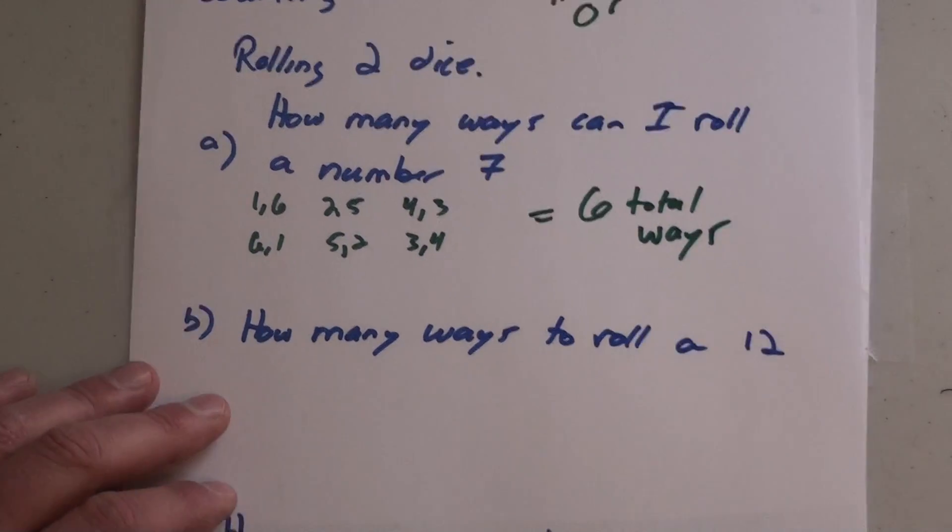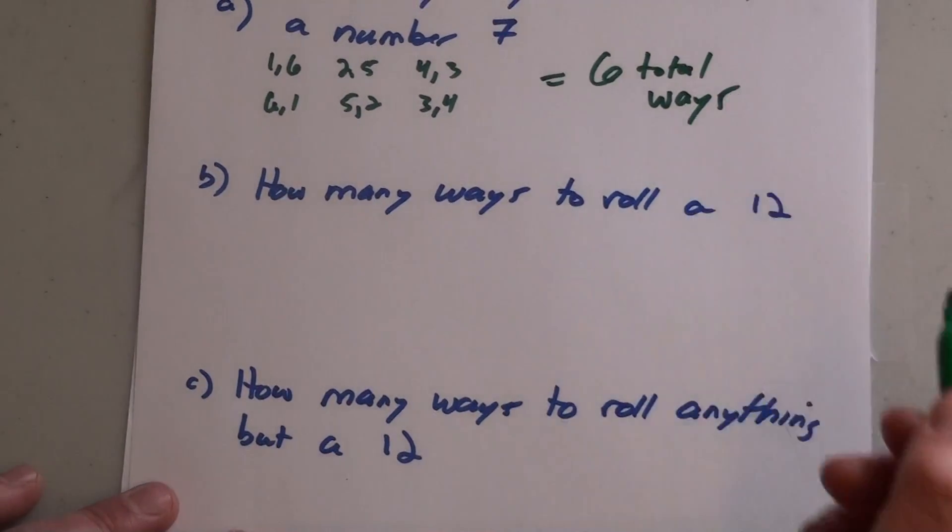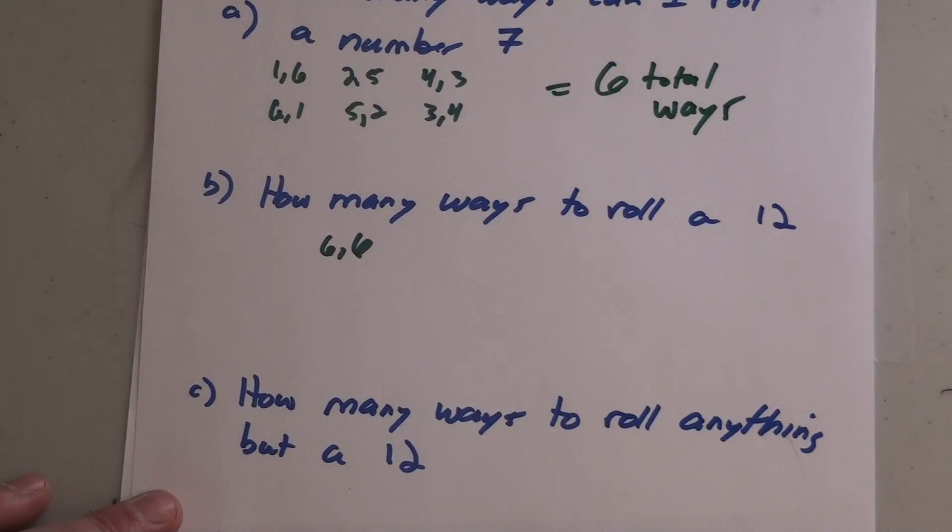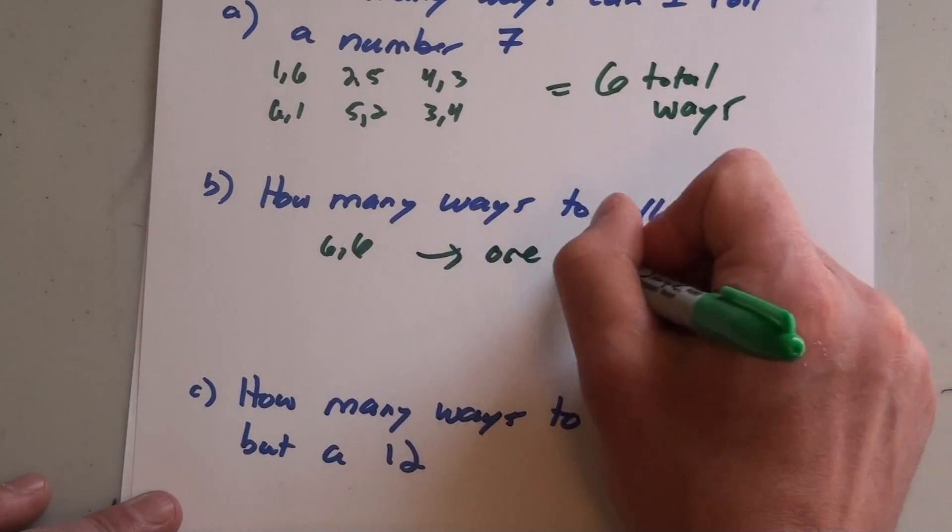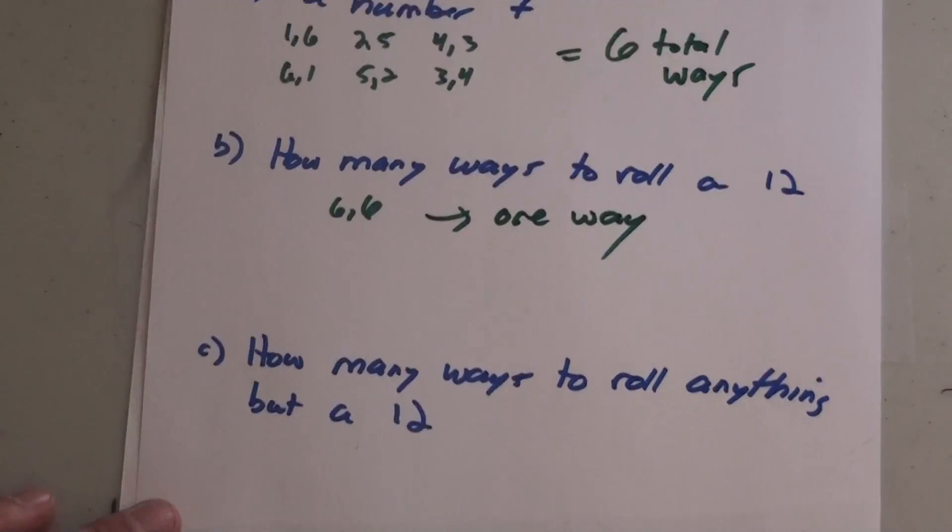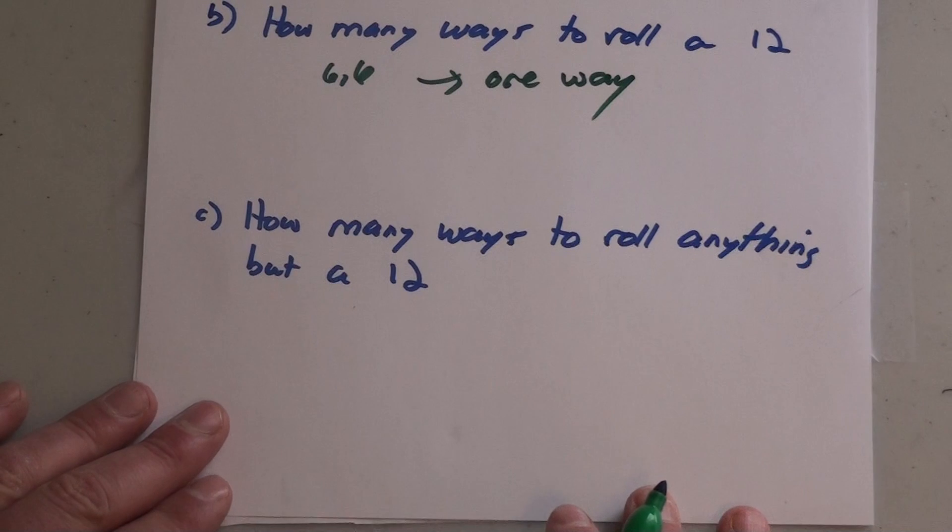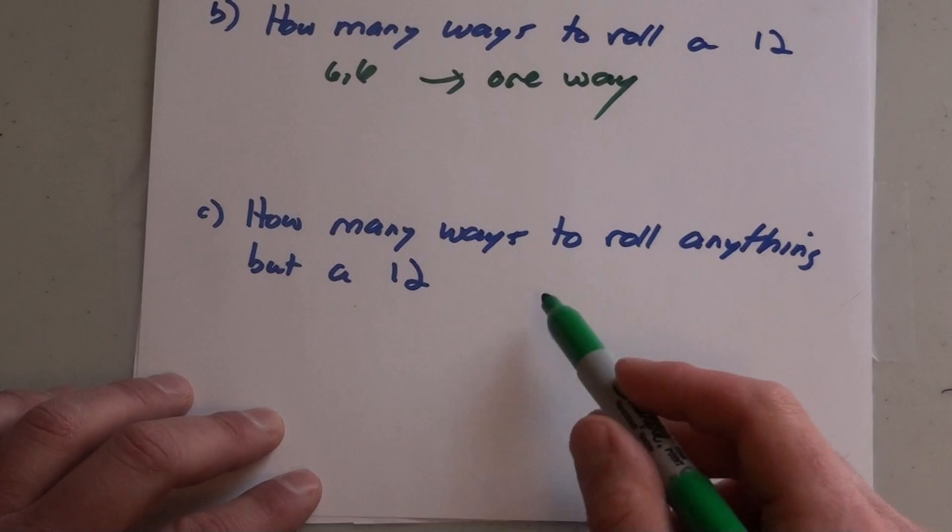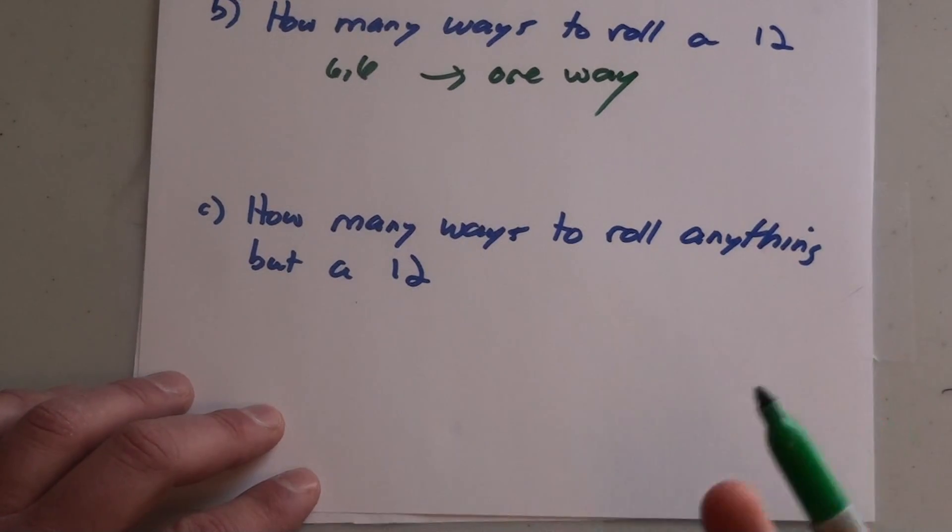How many ways can I roll a 12? Well, the only way you can roll a 12 is if you roll a six on the first one and a six on the second one - there's only one way. And how many ways can I roll anything but a 12? Well, this gets into the total scenarios.